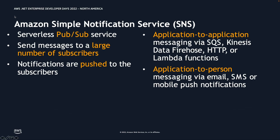Amazon Simple Notification Service is a fully managed messaging service providing functionality to implement a publisher-subscriber architecture. With this architecture, you can send a single message to a large number of subscribers, and notifications are pushed to them. It supports both application-to-application and application-to-person messaging. Common endpoints for application-to-application include SQS, HTTP, or a Lambda function. For application-to-person, you can send via email, SMS, or mobile push. In the demo, we'll see how a single message published to SNS can be sent to SQS and trigger an email.